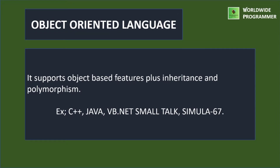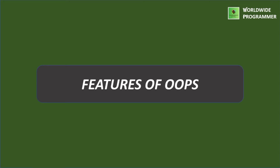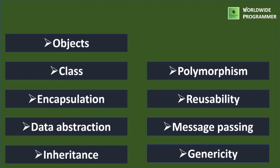Next one is object-oriented language. It supports object-based features plus inheritance and polymorphism. For example, C++, Java, VB.NET, Smalltalk, Simula67. Next we will discuss about features of object-oriented programming. The features are: objects, class, encapsulation, data abstraction, inheritance, polymorphism, reusability, message passing, and generics. We will discuss them one by one.